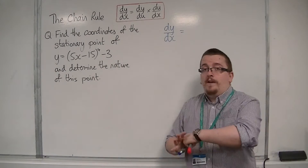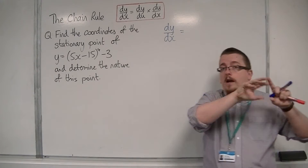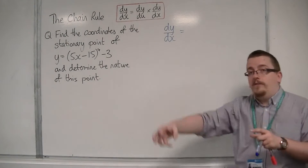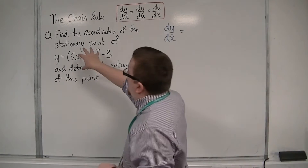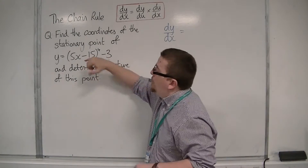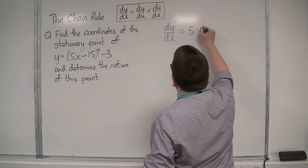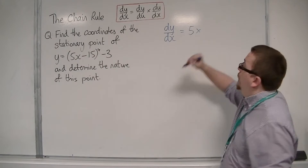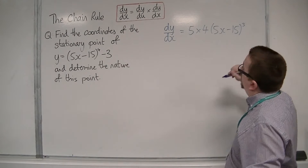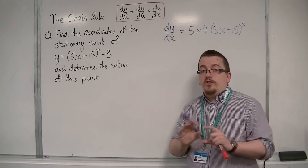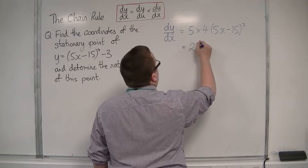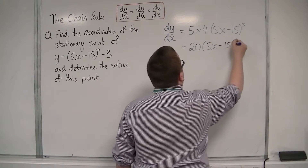You can use the u-substitution method, but I'm going to use the fast way. I look at what's inside and take the derivative of the inside to the outside. The derivative of (5x - 15) is 5, so that comes out to the front. The 4 comes down to the front as well, the bracket remains, and we take 1 off the power. The minus 3 on the outside differentiates to 0, so it won't be included. So dy/dx = 20(5x - 15)³.